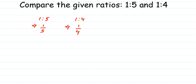When comparing fractions, first check if the denominators are the same. If they are, you can directly compare the numerators. But here the denominators are different — 5 and 4 — so we need to make them the same. To do this, we take the LCM of the denominators 5 and 4, which is 20.